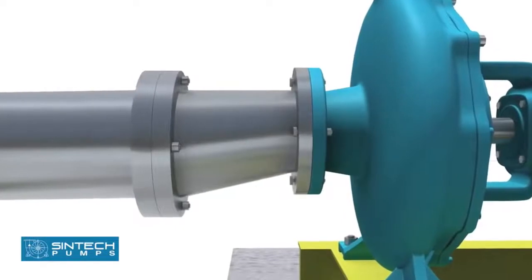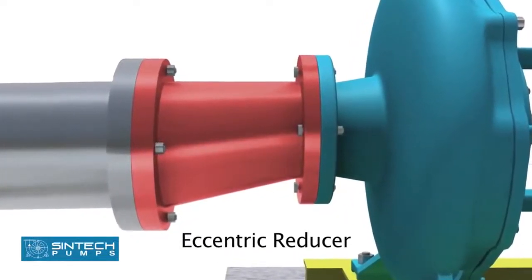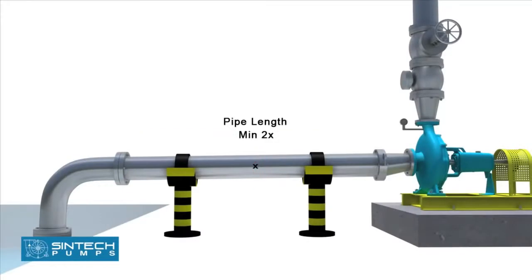The reducer joining the straight length of the pipe in the pump line should be an eccentric reducer with the inclined side of the reducer as the bottom side. The straight length of the pipe after the eccentric reducer should be 2 times the pipe diameter.